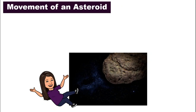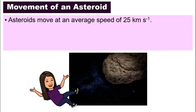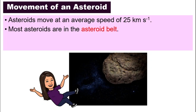Let's move on to asteroid. Asteroid moves at an average speed of about 25 kilometers per second. As you can recall, we talked about the asteroid belt. Can you still remember its location? It is located in between the orbit of Mars and Jupiter.